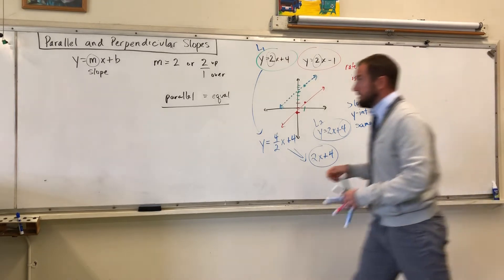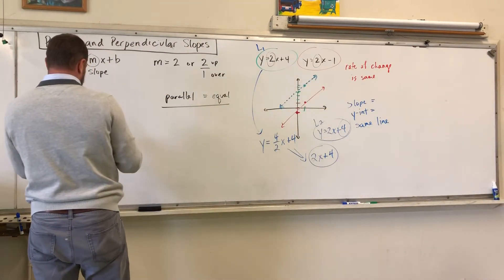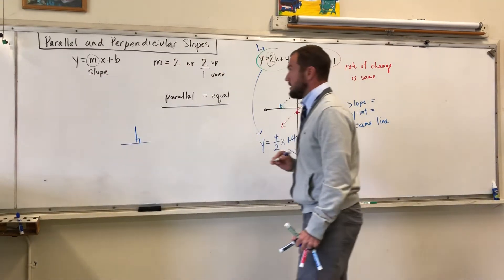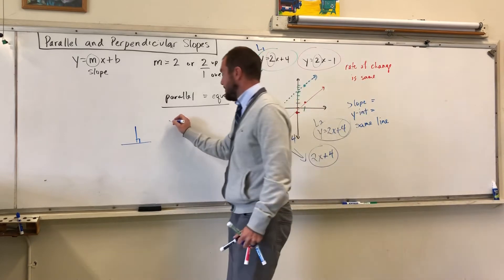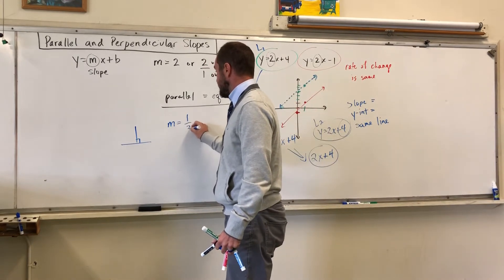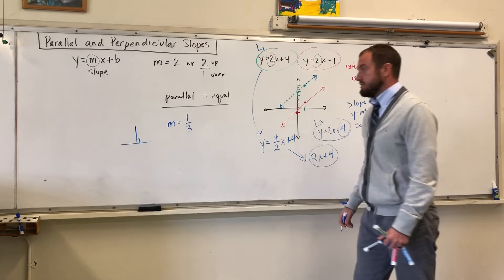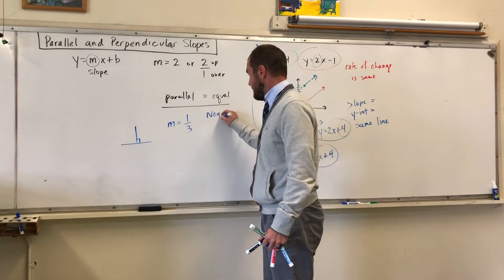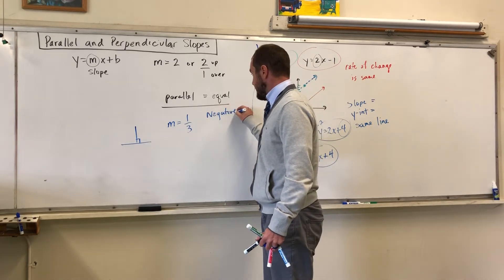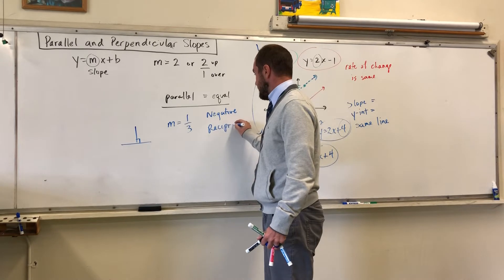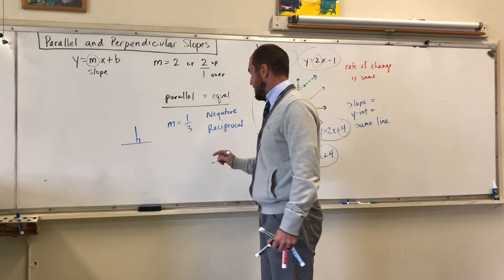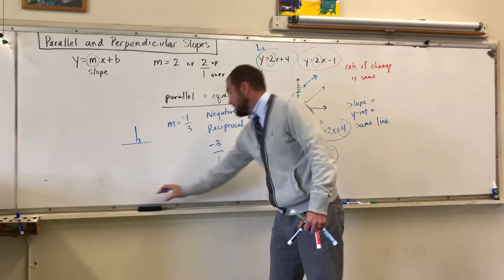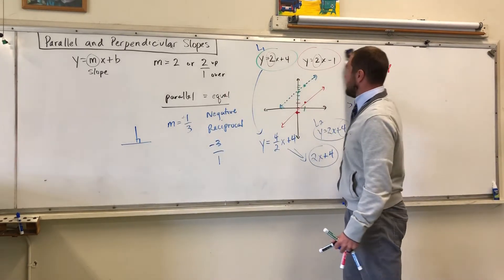Now let's look at a perpendicular case. Here's your symbol for perpendicular. Let's say my slope is 1 over 3. A perpendicular slope will be the negative reciprocal — meaning flipping the fraction and changing the sign from positive to negative. Let's look at some examples of that.